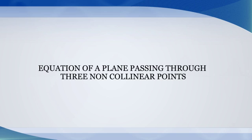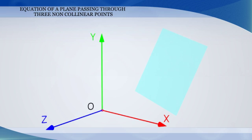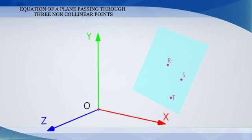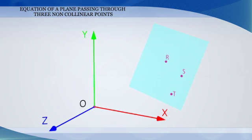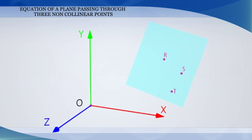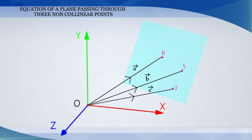Equation of a plane passing through three non-collinear points. Let R, S, T be three non-collinear points on the plane with position vectors A, B, C respectively.